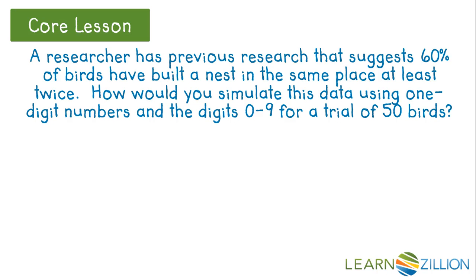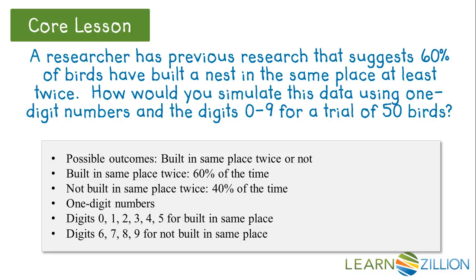Let's go back to our lesson introduction. A researcher has previous research that suggests 60% of birds have built a nest in the same place at least twice. How would you simulate this data using one-digit numbers in the digits 0 through 9 for a trial of 50 birds? The possible outcomes are either the bird built in the same place or not. Built in the same place happens 60% of the time. There are 10 digits in the numbers 0 to 9, so 60% of 10 is 6. We need to use 6 digits to represent a bird that builds a nest in the same place. Not building in the same place happens 40% of the time. 40% of 10 is 4, so we need to use 4 digits to represent a bird that does not build in the same place.